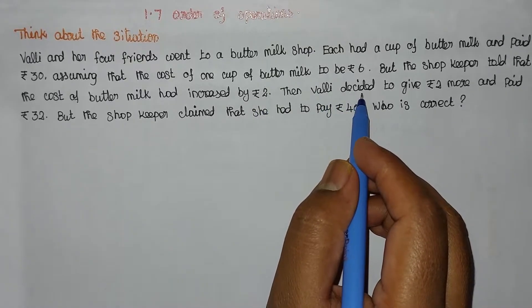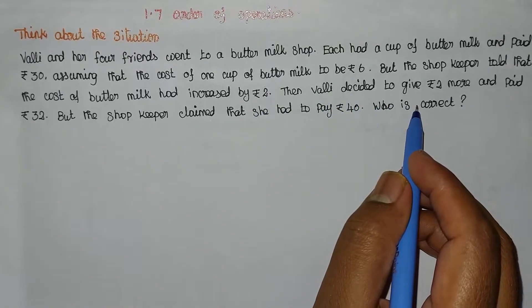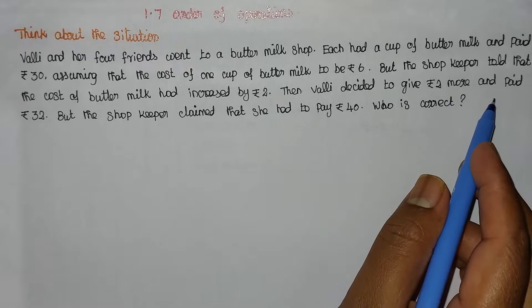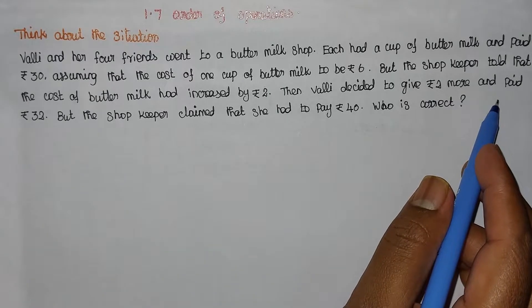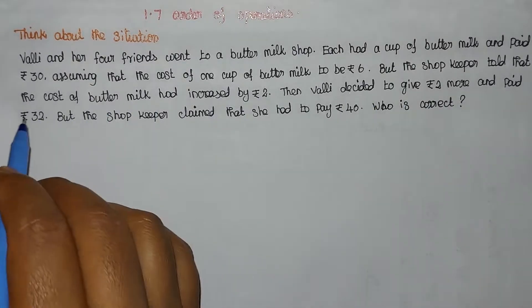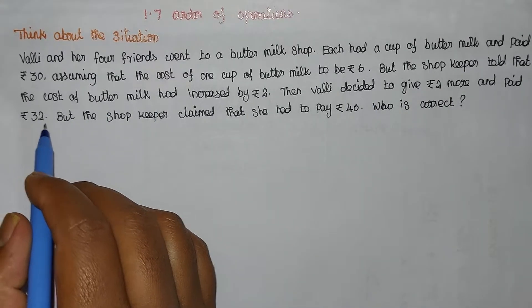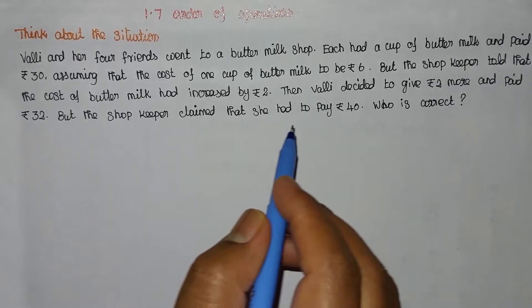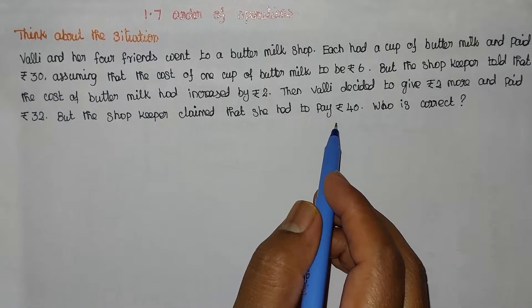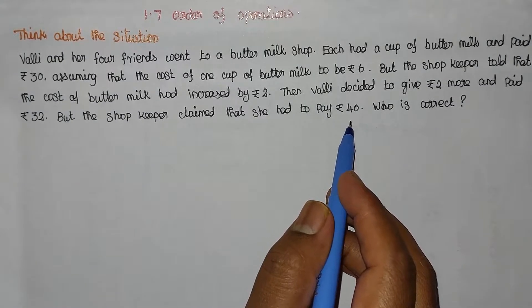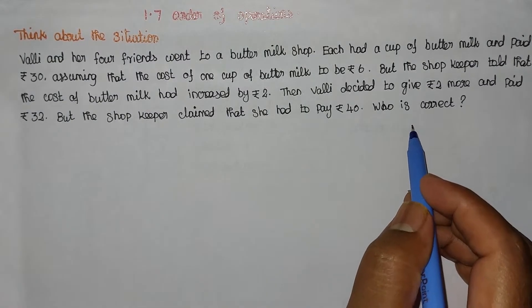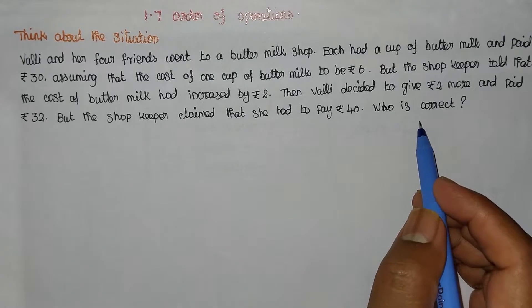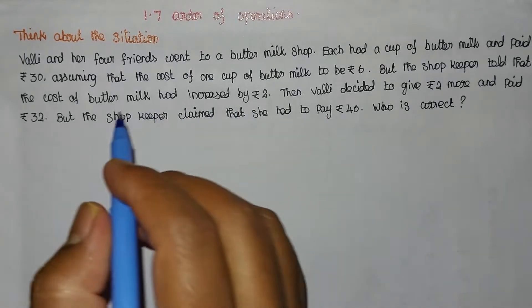Then Wally decided to give 2 rupees more and paid 32 rupees. But the shopkeeper claimed that she had to pay 40 rupees. Who is correct?